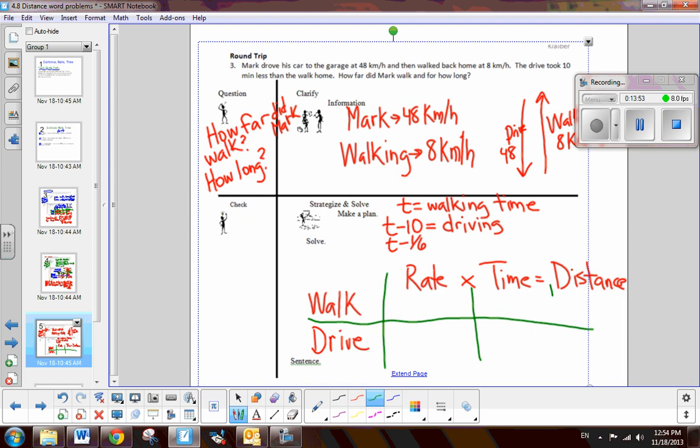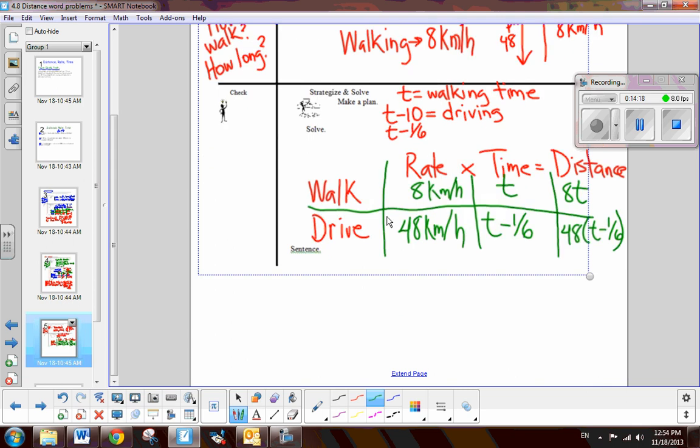So, for walking, the rate is 8 kilometers per hour. For driving, it's 48 kilometers per hour. The time spent walking, we said, was T. Driving is T minus 1 sixth. So, then the distance is 8T. And then this would be 48 times T minus 1 sixth. Now, we have to be able to write an equation comparing the distances. Now, do these two distances add up to a number? Or are they equal to one another? Well, since it's a round trip, we would know that the distance to the garage is equal to the distance back from the garage. And now, we can solve for T.